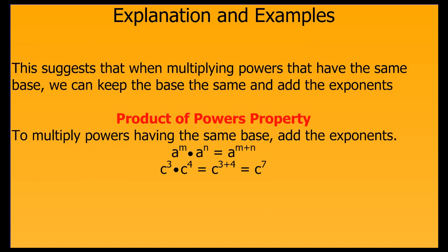This leads us to the product of powers property, which states that if you want to multiply powers with the same base, you can keep the base the same and simply add the exponents. So if you have a to the m times a to the n, your answer will be a to the m plus n. In our example with c's, c to the third times c to the fourth is c to the three plus four, or c to the seventh.